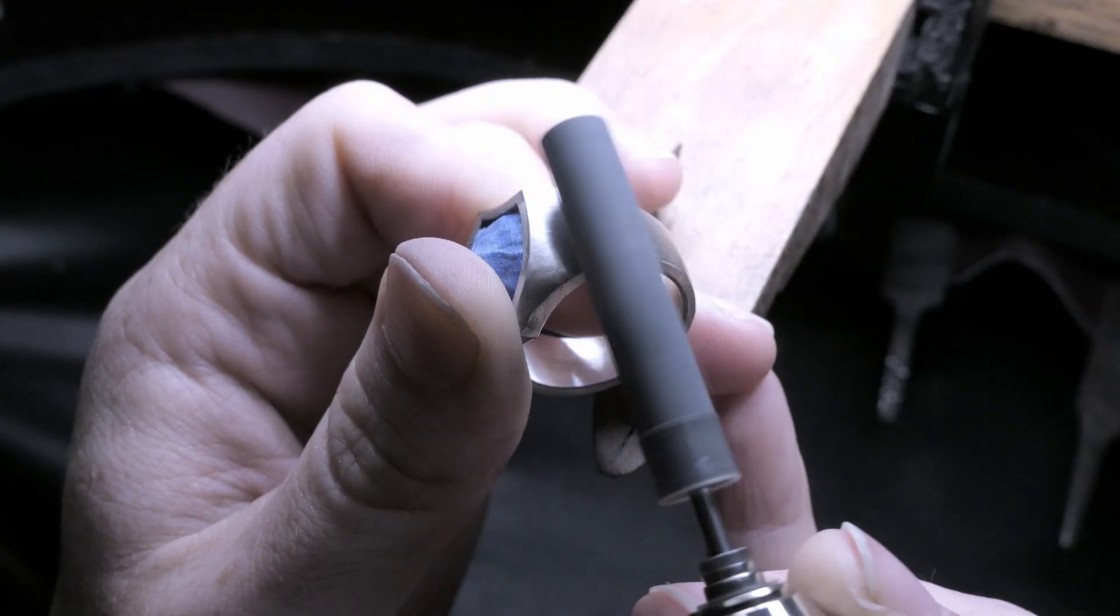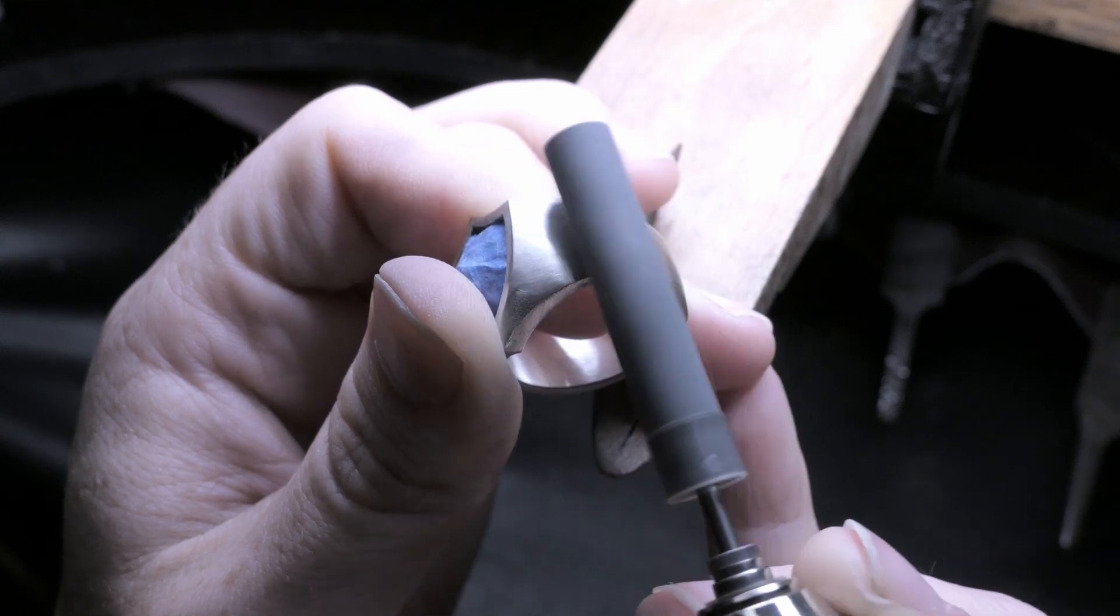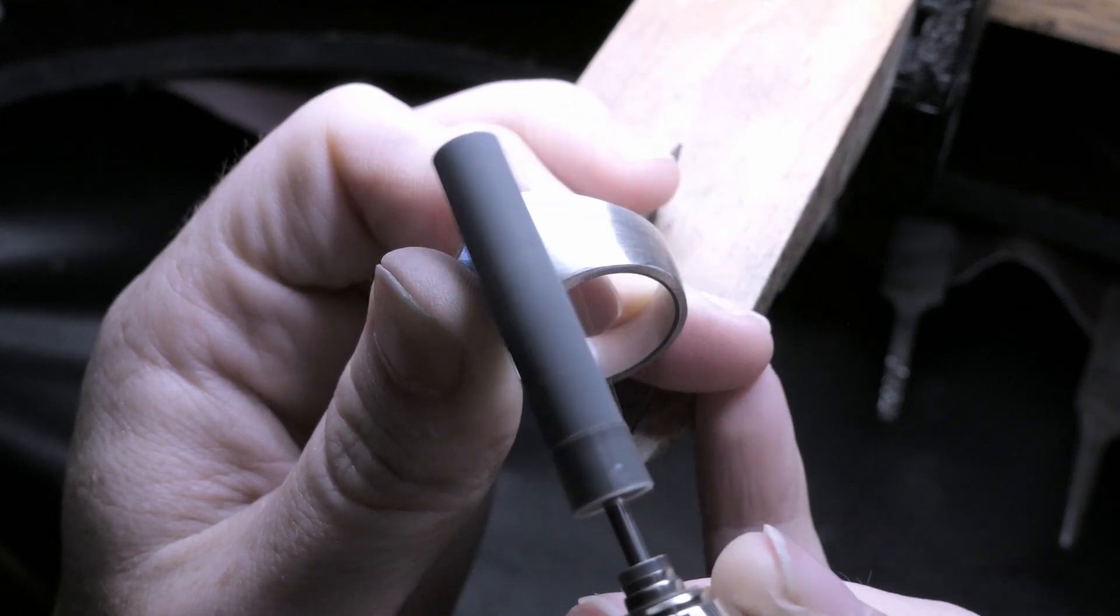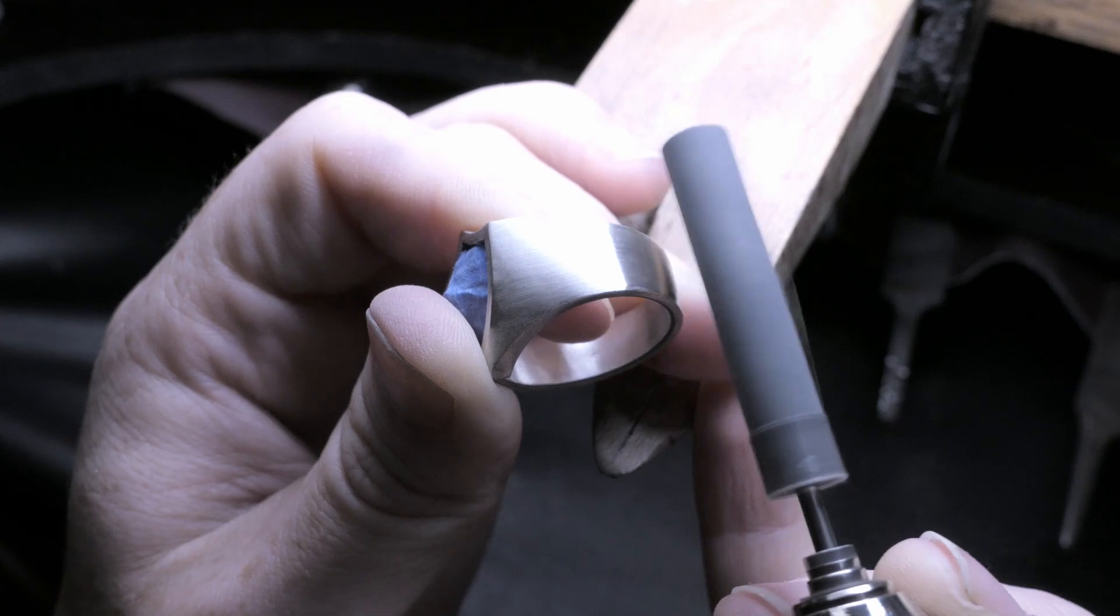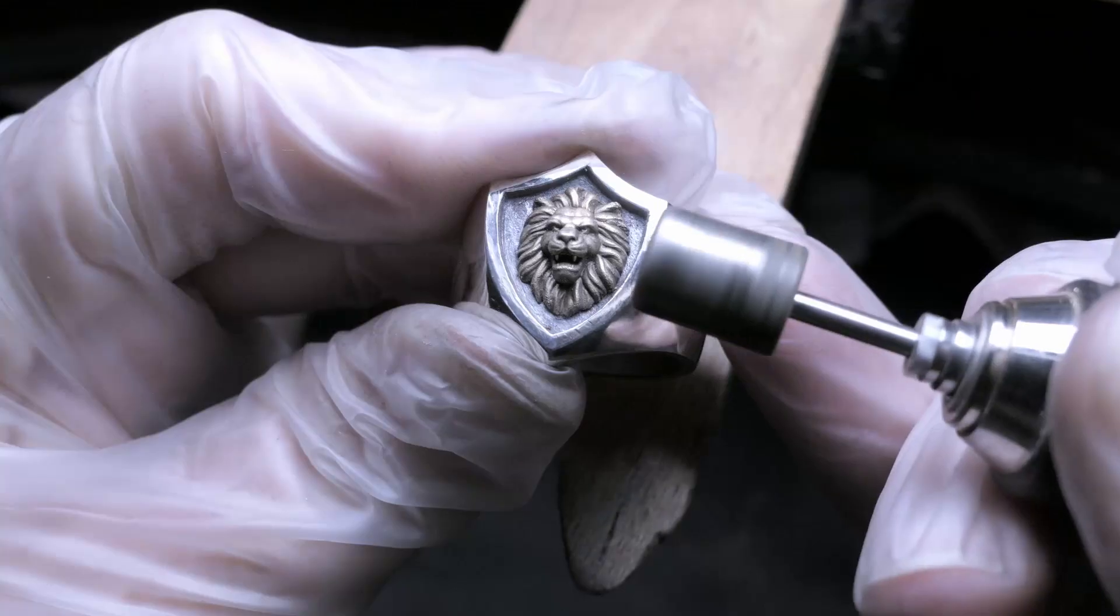Then I just polished up the silver trying not to touch the lion head and I want to leave the inside of the shield dark just to make the head stand out better.